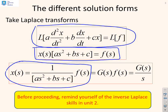Rearranging, X(s) equals 1 over (as² + bs + c) times F(s). Since f is just a constant, F(s) — for simplicity — is just 1/s, making f equal to 1. Therefore we end up with X(s) = 1 / [s(as² + bs + c)].